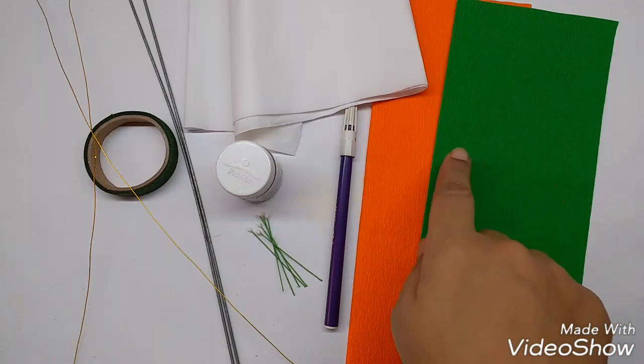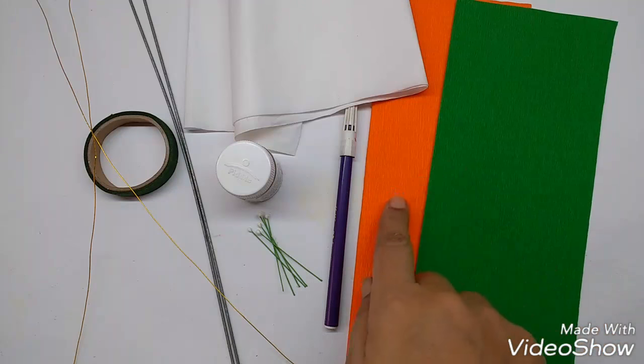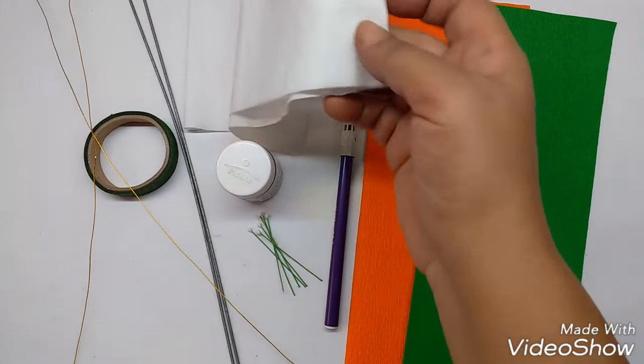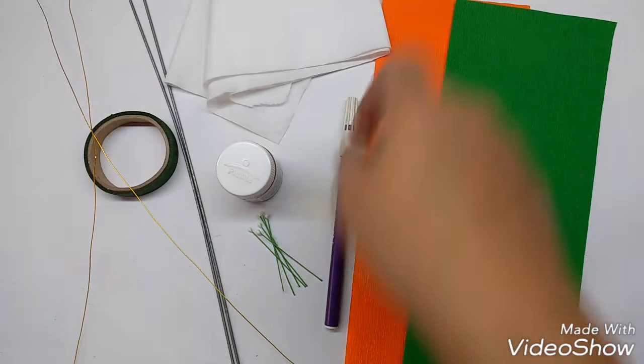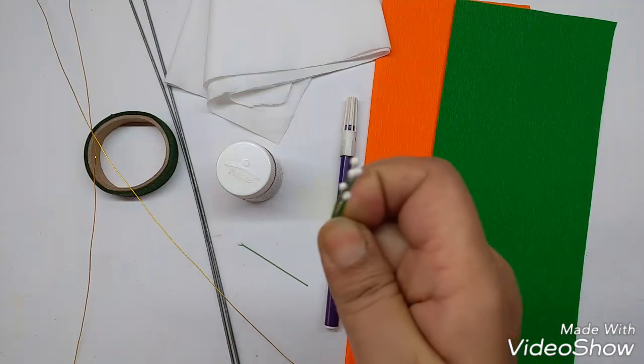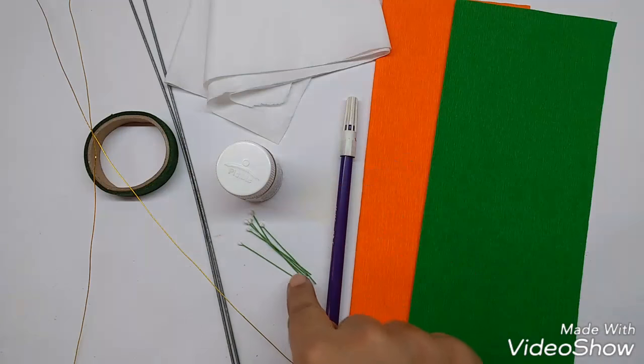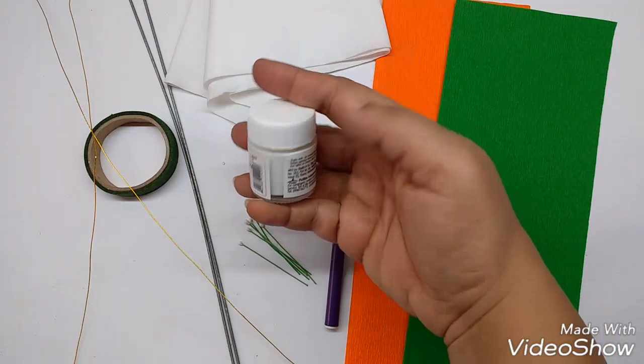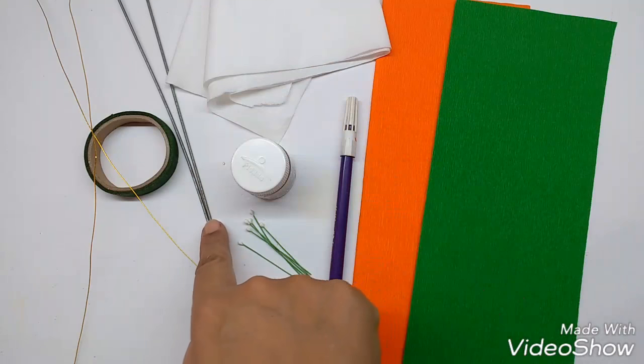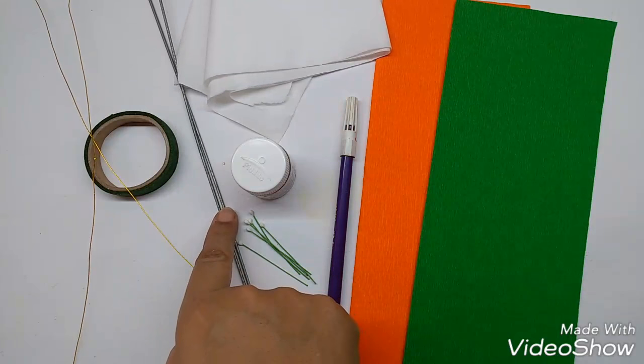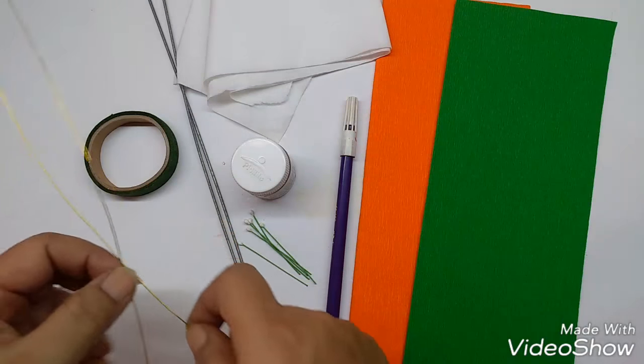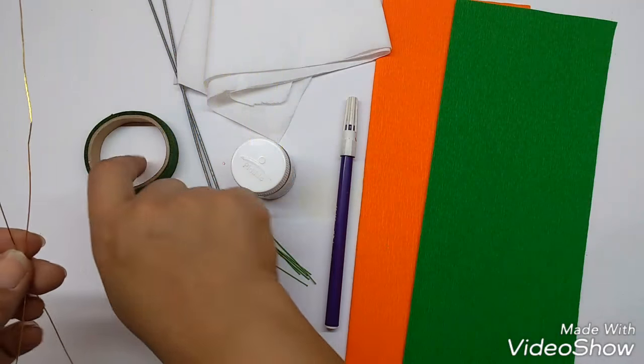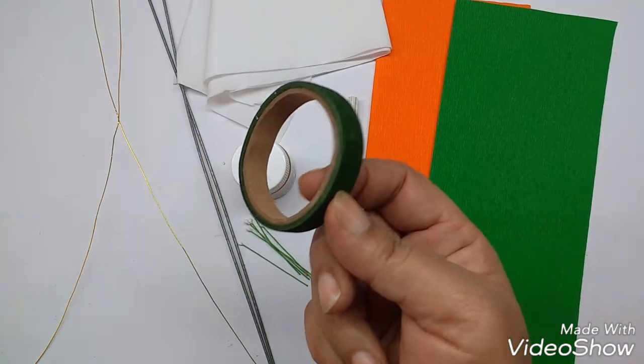Material required are colored crepe paper in green and bright orange. Some toilet roll tissue paper. Some white headed pips. If they have a green stem, you have to use white acrylic paint to color them white. Thick wires, a couple of them for one stem. Some thin wires and a green floral tape.